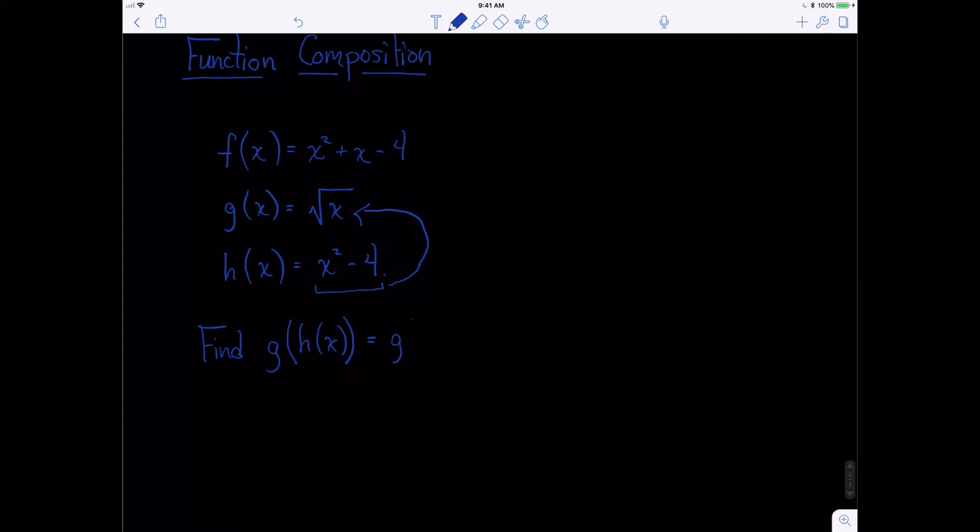So we write it like this. This becomes then g of x squared minus 4. So I'm just replacing the h of x with the x squared minus 4. But now what our next step is, is to put x squared minus 4 into g. So that becomes the square root of x squared minus 4. And that would be g of h of x.